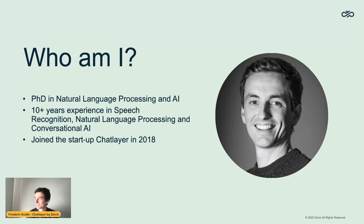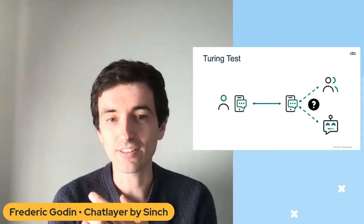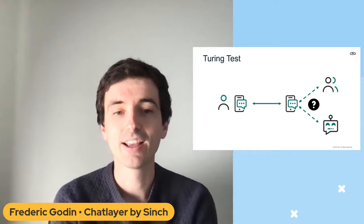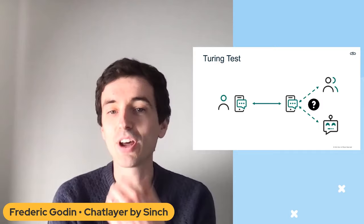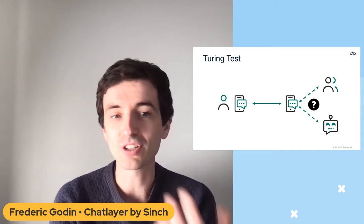The goal of a chatbot platform is to give users such a good experience that it seems like they're talking to a human. This is what the Turing Test is about. In the 1950s, the famous mathematician Alan Turing said: if I'm having a text conversation and I'm not able to distinguish a human from a robot, then we could say that machine is intelligent.